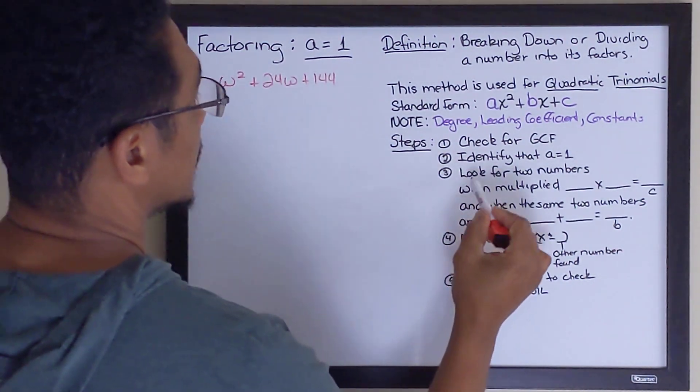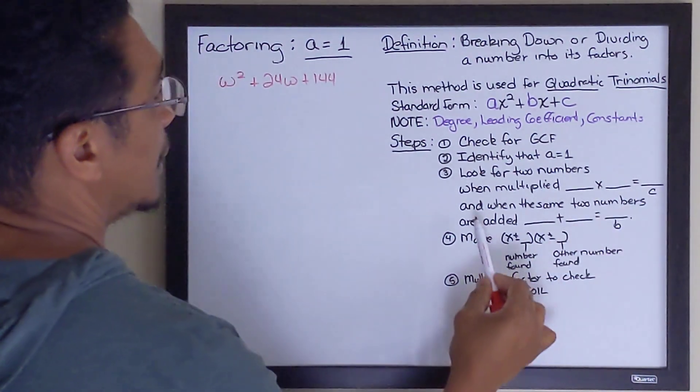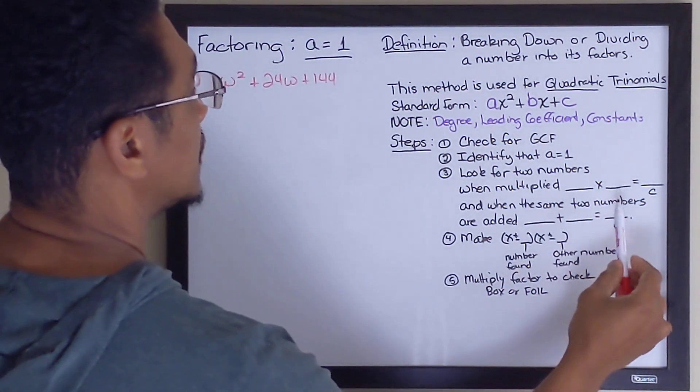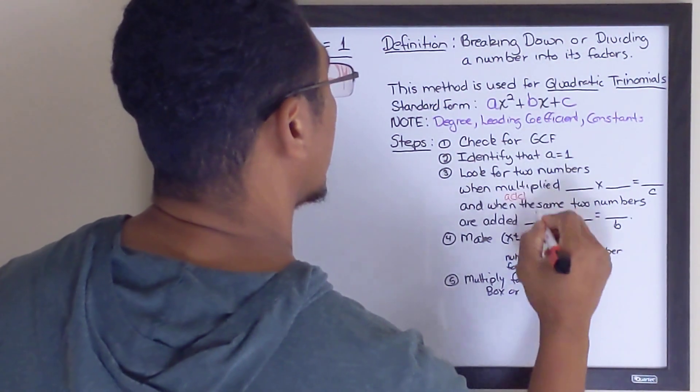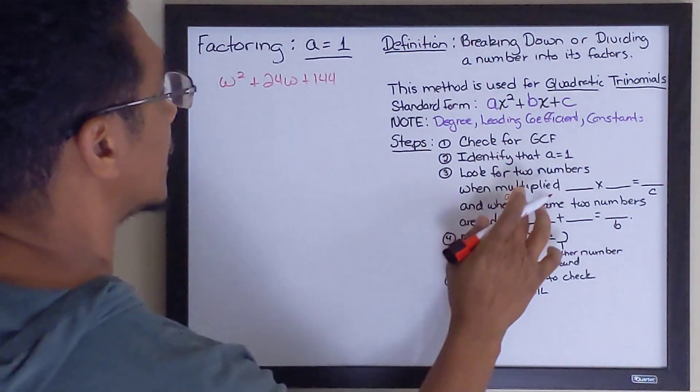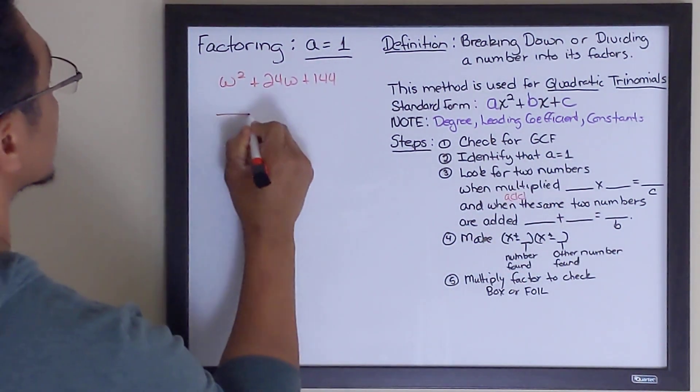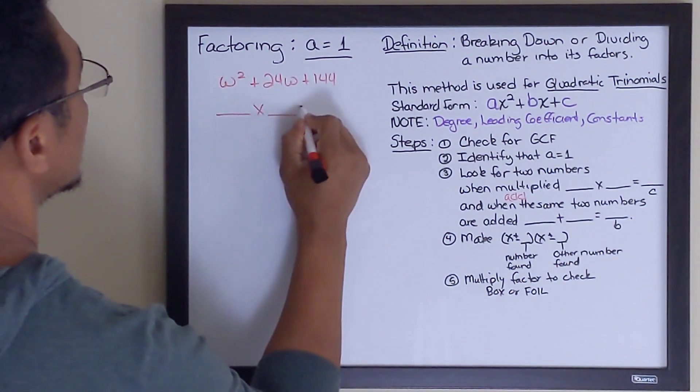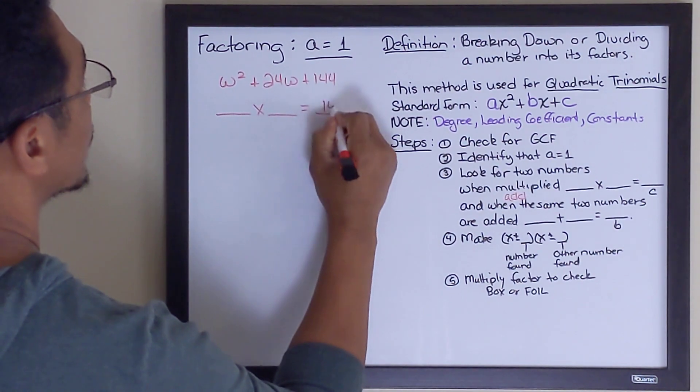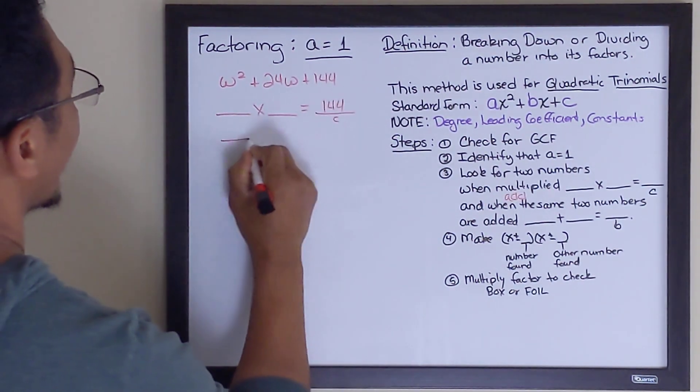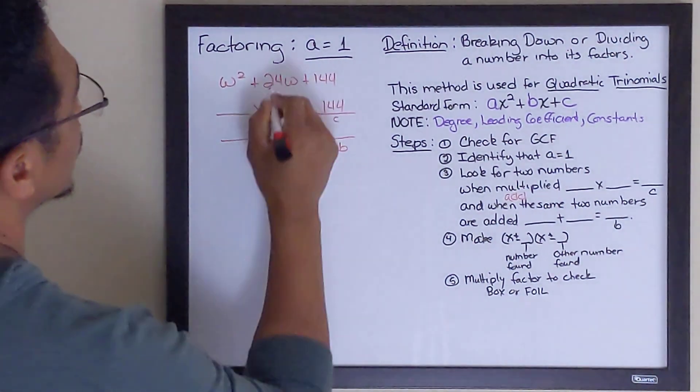Now, the next step is we're going to look at two numbers. When multiplied, we're going to get the value of c. And when you add the same two numbers, you get the value of b. So here's what we're going to do. We're going for two numbers. When we multiply them together, we get the value of c, which is 144. And when we add those same two numbers, we're going to get the value of b, which is 24.